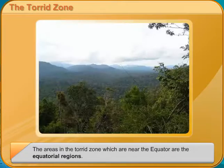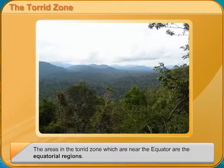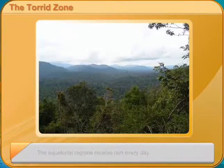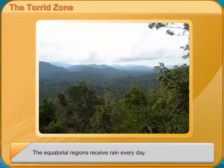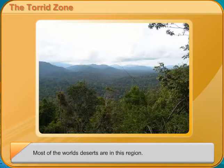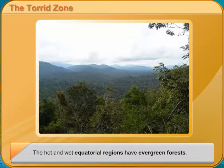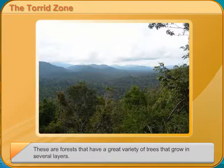The equatorial regions receive rain every day. This region has no winter. Most of the world's deserts are in this region. The hot and wet equatorial regions have evergreen forests — forests that have a great variety of trees that grow in several layers. The areas which get heavy rains during summer have deciduous forests of trees that shed their leaves during the dry season.